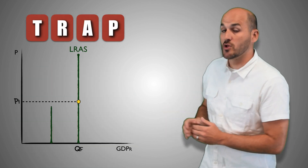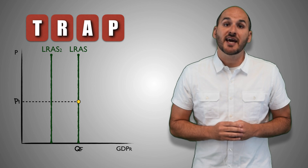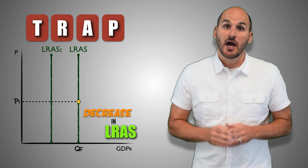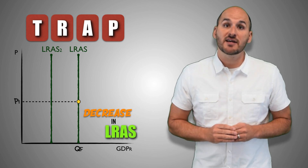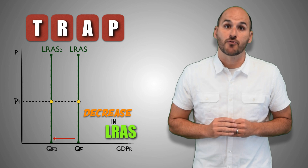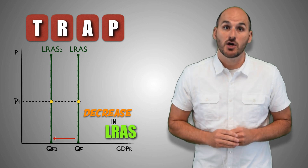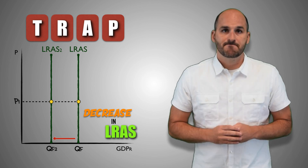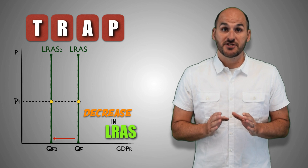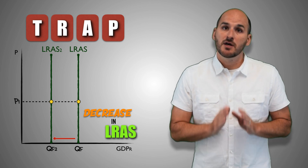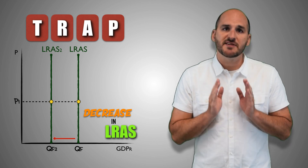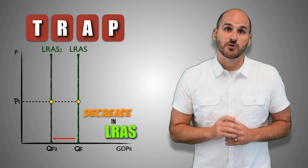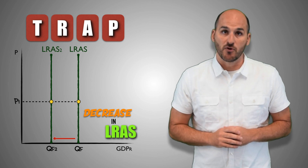A leftward shift of the long-run aggregate supply curve indicates that aggregate supply has decreased in the economy, and the economy now has the potential to produce a lesser quantity of real GDP output at full capacity, no matter the price level. Inflation or deflation? Doesn't matter. The domestic economy simply can't produce as much as it used to, and now will produce less real GDP at full employment.